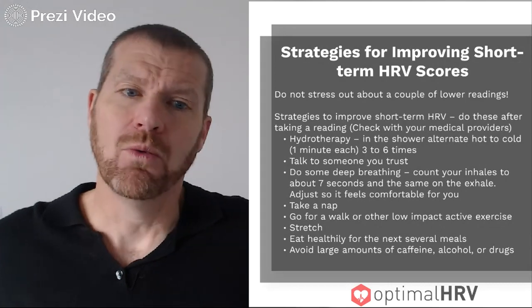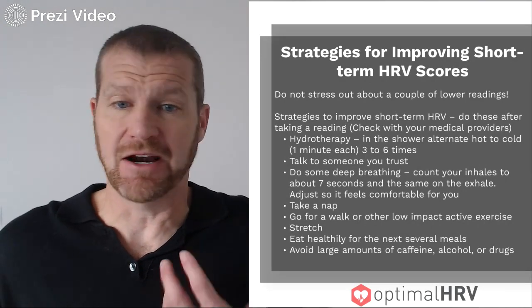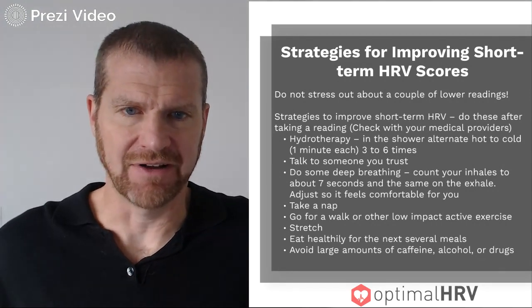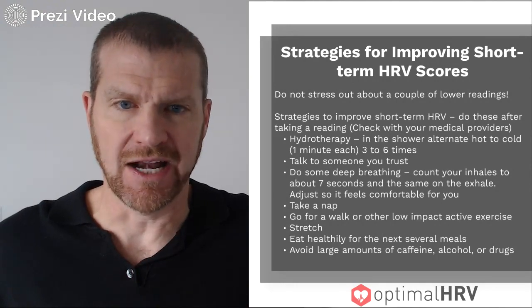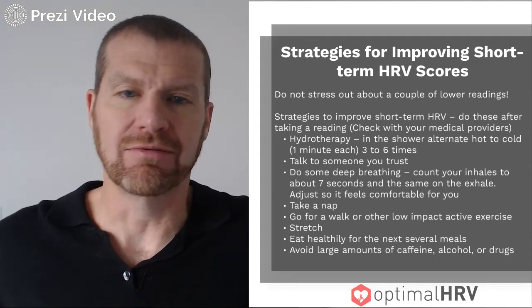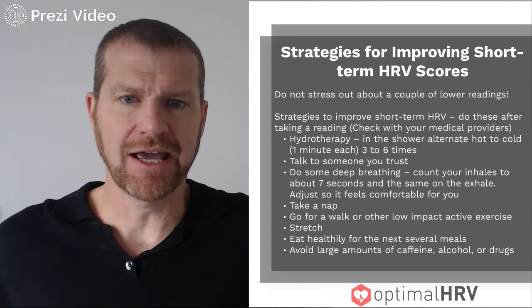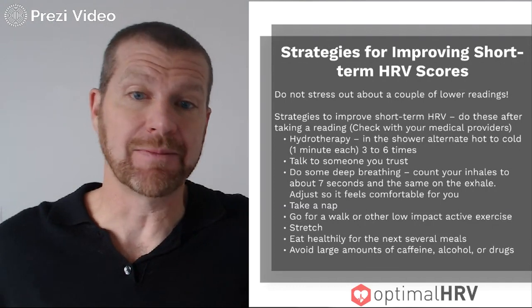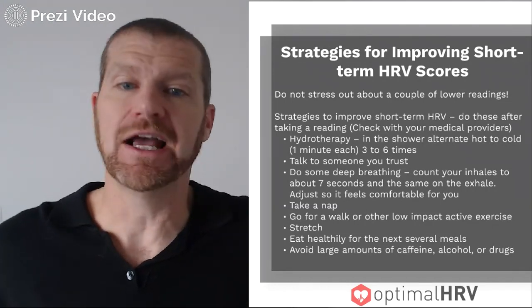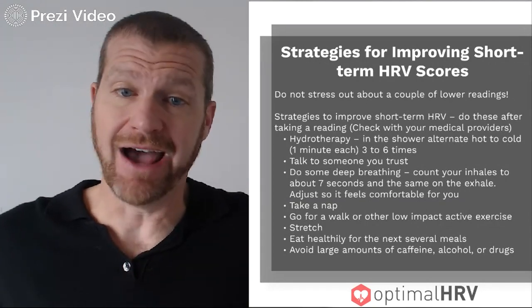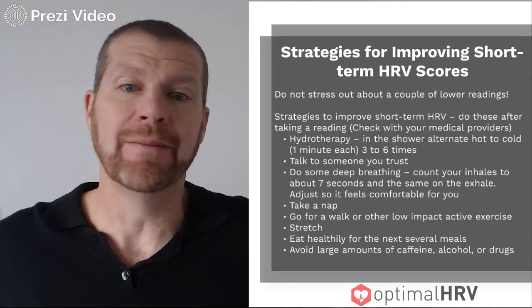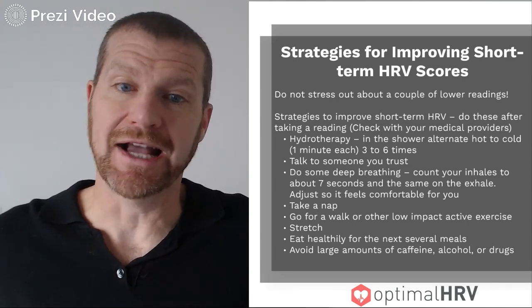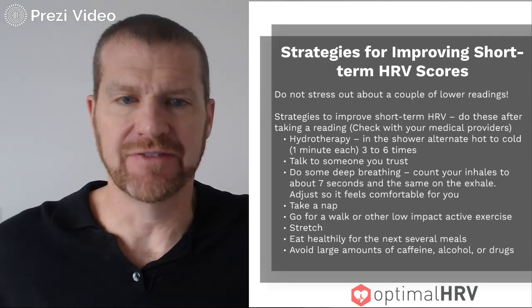You can also do some deep breathing. One of my favorites, especially when you need to be at your best, is to inhale for a count of seven and exhale for a count of seven. This equal breathing helps balance and restore strong heart rate variability. If you're feeling really stressed, try inhaling for five and exhaling for ten — that activates the calming part of your nervous system. If seven counts is too hard, try five or four. If you're feeling anxious, try inhaling for four and exhaling for eight, making the exhale twice as long as the inhale to activate the calming side of your nervous system.